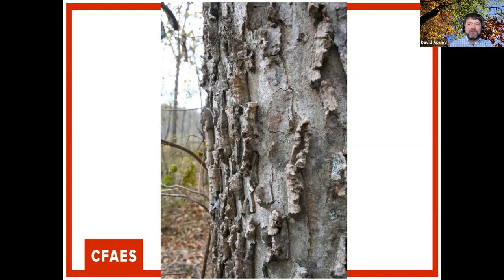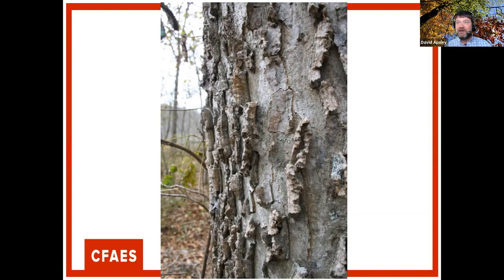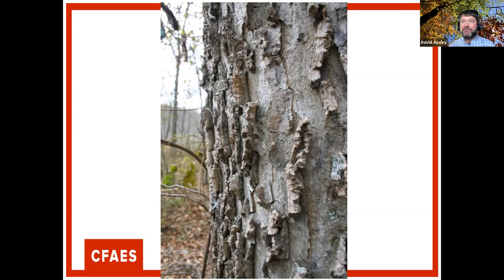Tree ID requires looking at details rather than standing back. Hackberry, identified by attendees, starts with fairly smooth gray bark when small but develops a unique pattern of scattered layered bark ridges on the surface as it matures. Another clue for conifers: pitch pine and shortleaf pine can sprout needles directly on the main trunk, which is a useful ID characteristic.